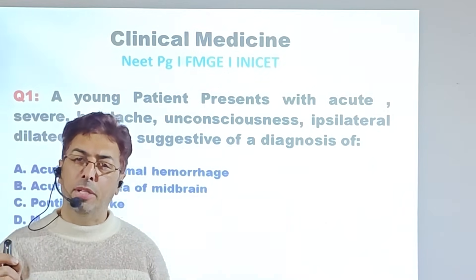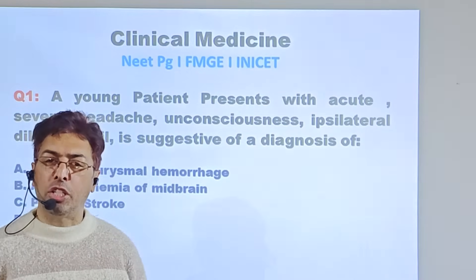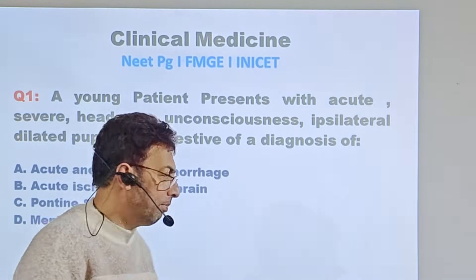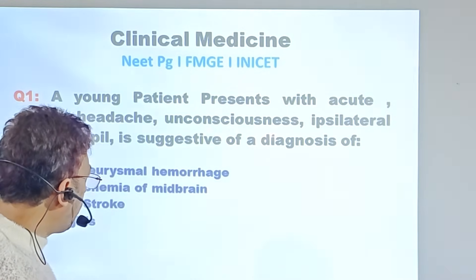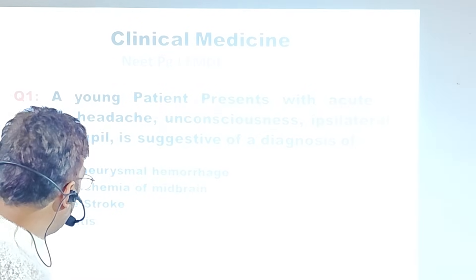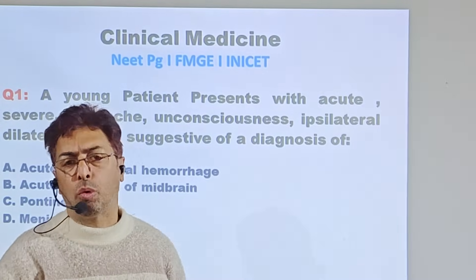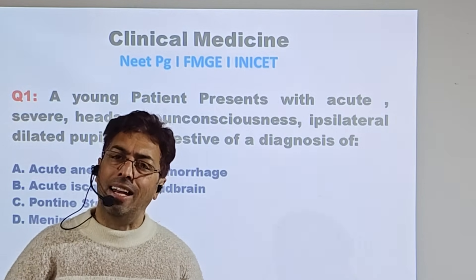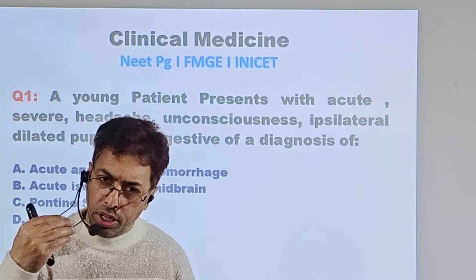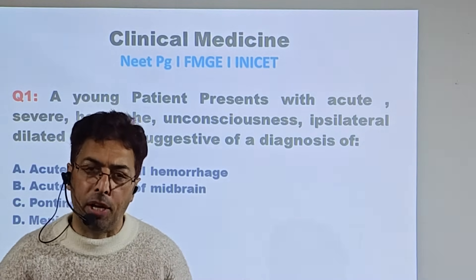Today I will be taking up a single question of how to arrive at a diagnosis — a clinical-based question from neurology. A young patient presents with acute severe headache, unconsciousness, and ipsilateral dilated pupil, suggestive of a diagnosis. The options are: acute aneurysmal hemorrhage, acute ischemia of midbrain, pontine stroke, and meningitis. My point is to make you understand how to read a question, how to read the options, and how to arrive at the answer.